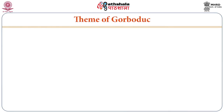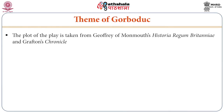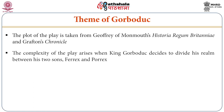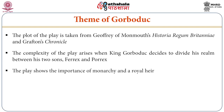Now, the theme of Gorboduc. The plot of the play is taken from Geoffrey of Monmouth's important work called Historia Regum Britanniae and Grafton's Chronicle — so it is a combination of these works. The complexity of the plot arises when King Gorboduc decides to divide his realm between his two sons, Ferrex and Porrex. The play shows the importance of monarchy and royal unity.